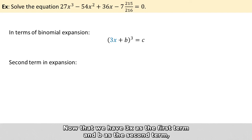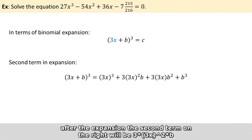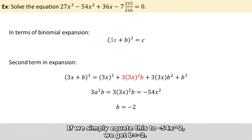Now that we have 3x as the first term and b as the second term. After the expansion, the second term on the right would be 3 times 3x raised to the power of 2 times b. If we simply equate this to minus 54x raised to the power of 2, we get b equals minus 2.